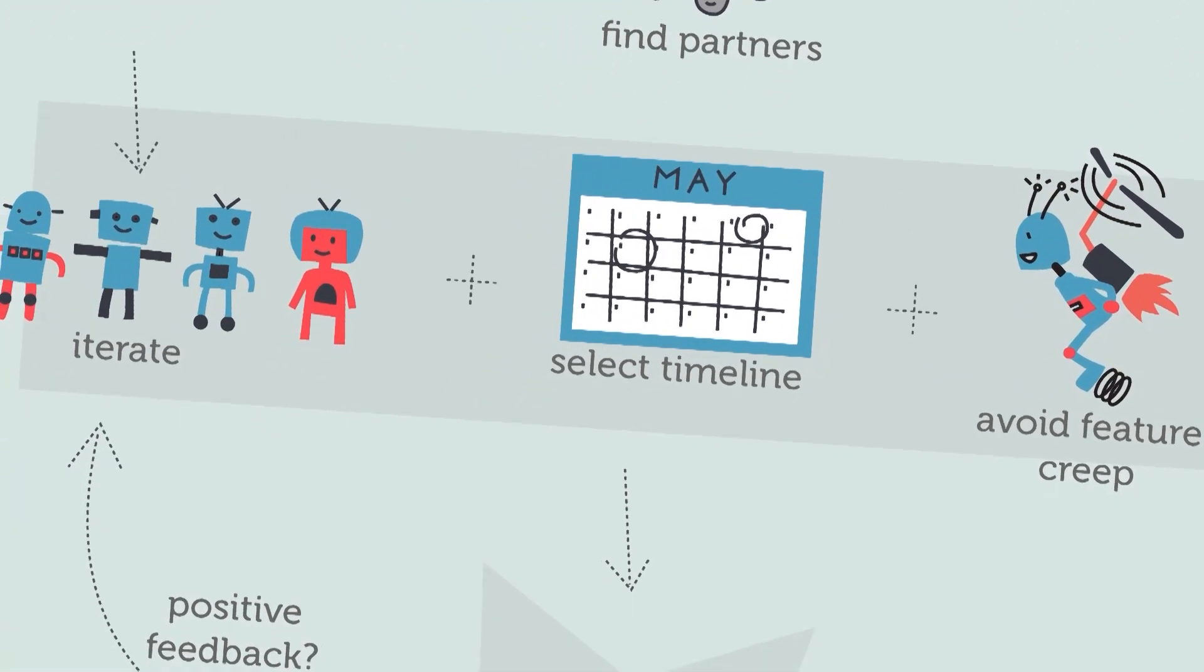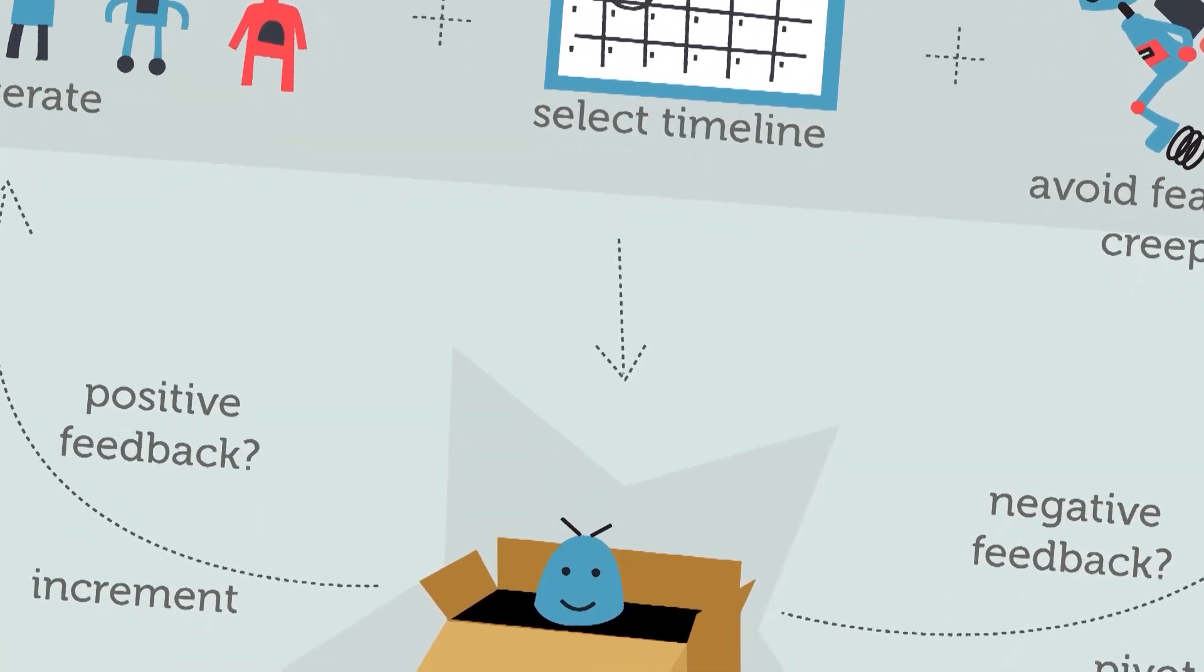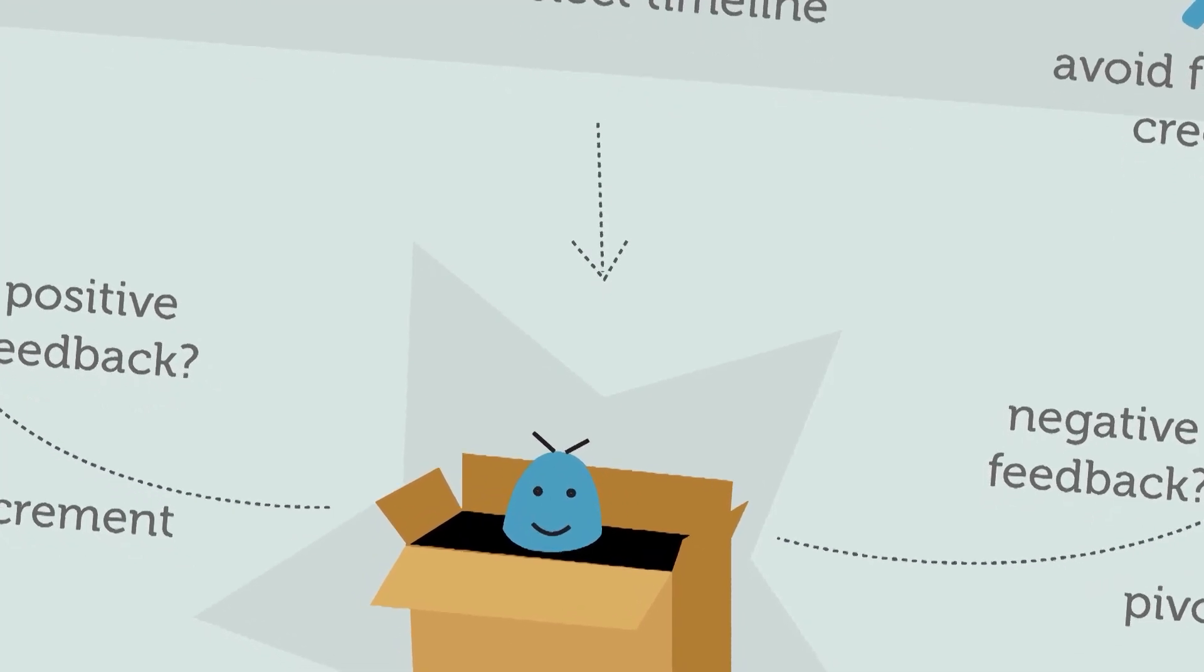It's more important that you get something out there that you feel pretty good about, and then you get feedback from people and use that to improve upon it. That's when you release the minimum viable product.